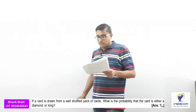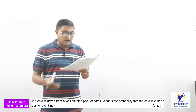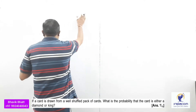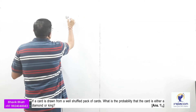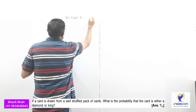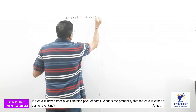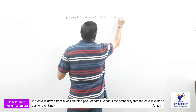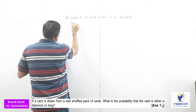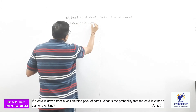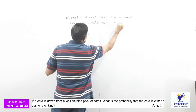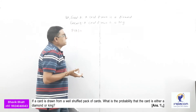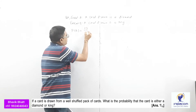Next question: a card is drawn from a well-shuffled pack of cards. What is the probability that the card is either a diamond or a king? Define event A: a card drawn is a diamond. Event B: a card drawn is a king. P(A) = 13 by 52 since there are 13 diamond cards in 52 cards.